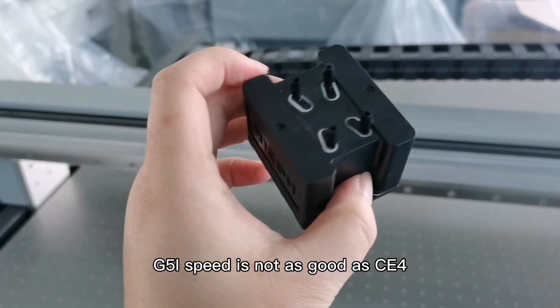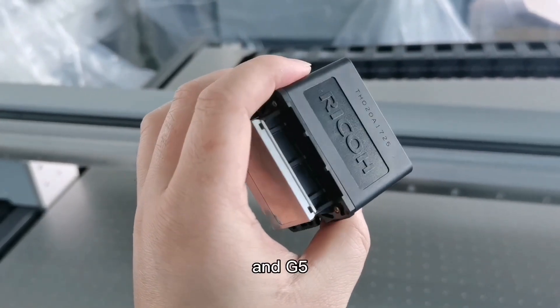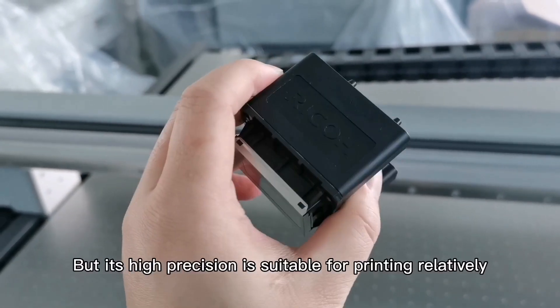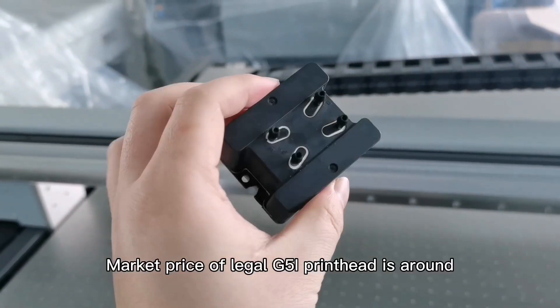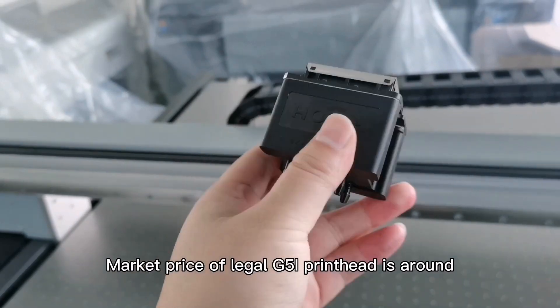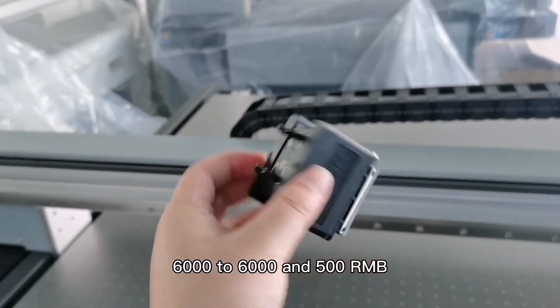G5i speed is not as good as CE4 and G5. Its high precision is suitable for printing relatively small fonts. Market price of Ricoh G5i printhead is around 6,000 to 6,500 RMB.